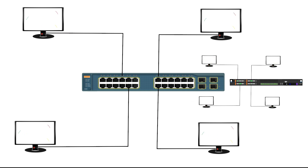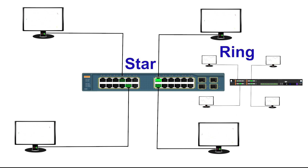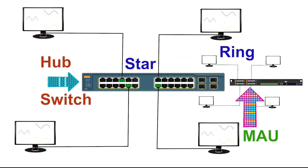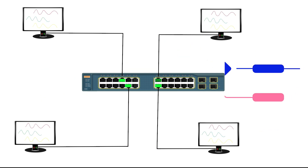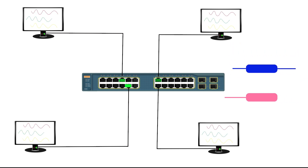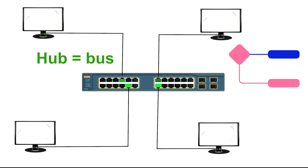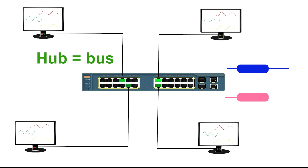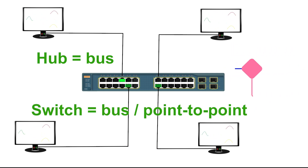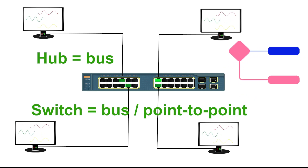Modern networks use the star topology. A star topology uses a physical layout similar to the ring topology. However, it uses a hub or ethernet switch to connect nodes. The data flow depends on what device is used. If it uses a hub, the data flows in a bus layout. If it uses an ethernet switch, data flows in a bus or point-to-point layout.